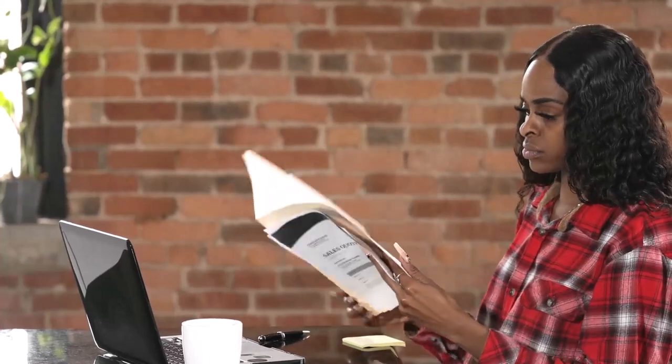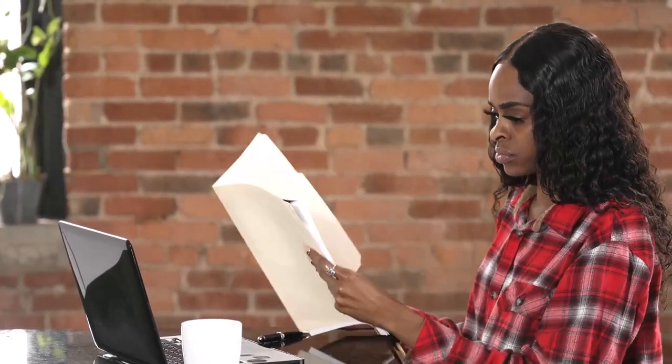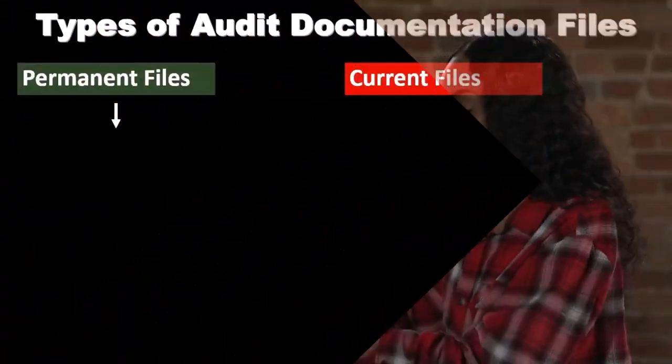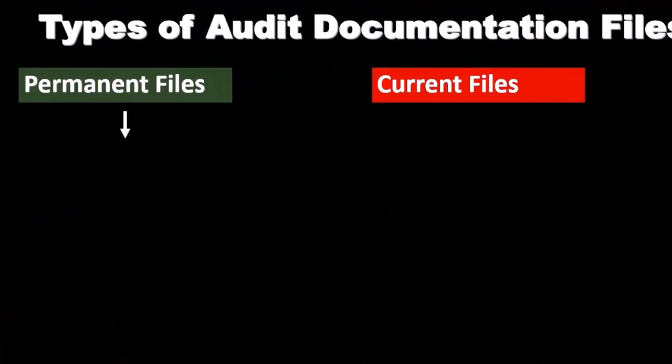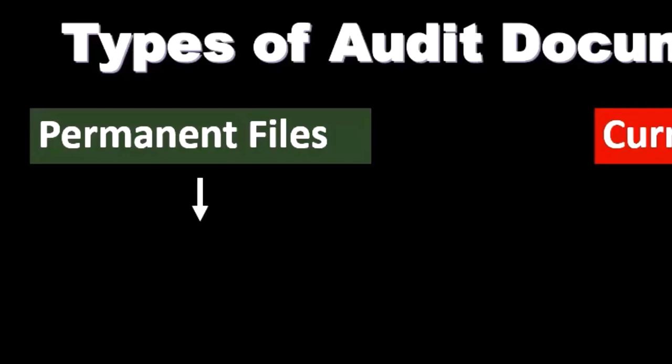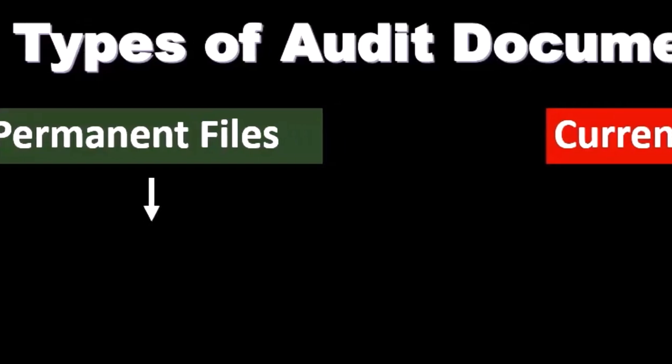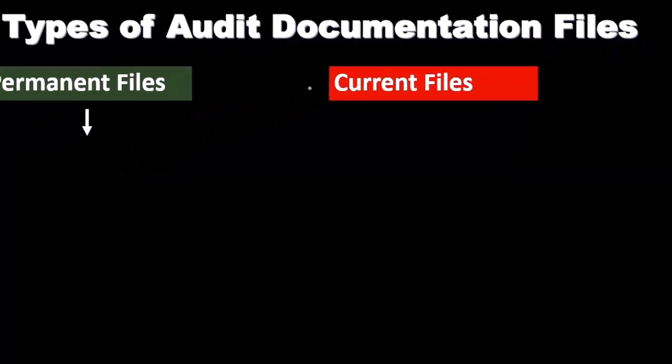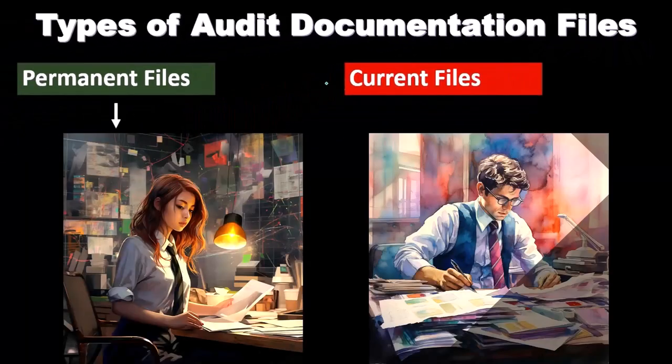Here's the person that did the procedure, here's the person that reviewed the procedure. When we store our audit documentation, we're typically going to have a client file, and oftentimes it'll be grouped into two types of client files: we'll have a client file for the permanent files, and then we'll have a client file for the current file.